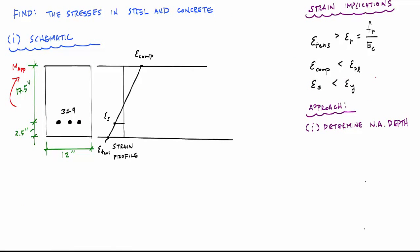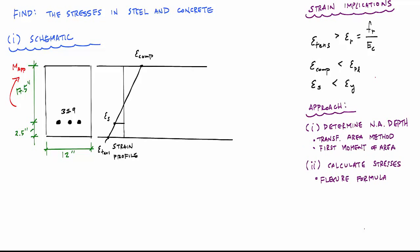Our approach is to determine the neutral axis depth using the first moment of area, then apply the flexure formula to calculate stresses. The hard part is always calculating the geometric properties of the cracked section. Since everything is linear elastic, we can use Hooke's law — the stress profile is also linear, and the neutral axis is where the strain is zero.